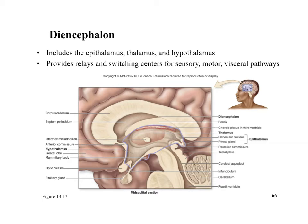The diencephalon helps control long-term homeostasis. It integrates sensory, motor, and visceral pathways together. It's underneath the corpus callosum — that white matter track. You also have the fornix at the bottom of the third ventricle. The thalamus is visible here, and beneath it is the hypothalamus.